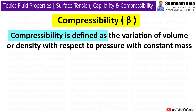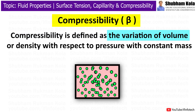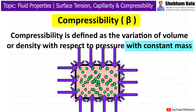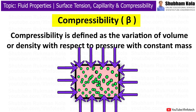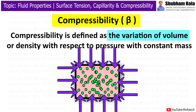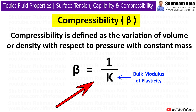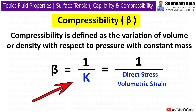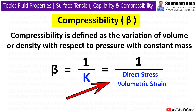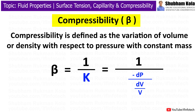The next term is compressibility. Compressibility is defined as the variation of volume or density with respect to pressure at constant mass. In simple words, compressibility is the measure of how much a given volume changes when placed under pressure. If the variation of volume with respect to pressure is high, then compressibility is high. Mathematically, compressibility is defined as the reciprocal of the bulk modulus of elasticity, where bulk modulus is defined as the ratio of direct stress to volumetric strain. In fluid mechanics, the direct stress is hydrostatic stress, and volumetric strain is the ratio of change in volume to original volume, equal to −V·dP/dV.